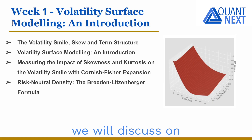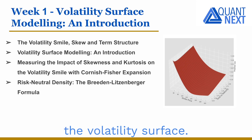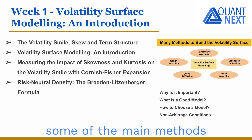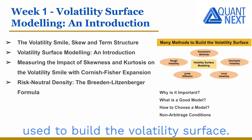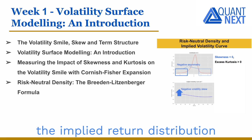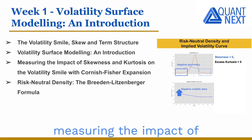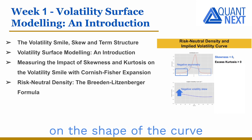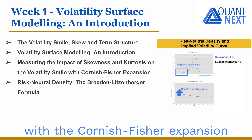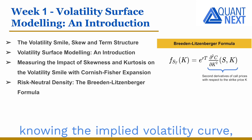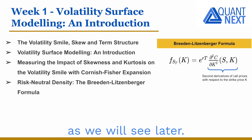In the first week we will discuss the different shapes of the volatility surface, give a quick overview of some of the main methods used to build the volatility surface, and analyze the relationship between the implied return distribution and the volatility smile — measuring the impact of the moments of the return distribution on the shape of the curve with the Cornish-Fisher expansion and introducing the Breeden-Litzenberger formula, very useful to price exotic option payoffs knowing the implied volatility curve.